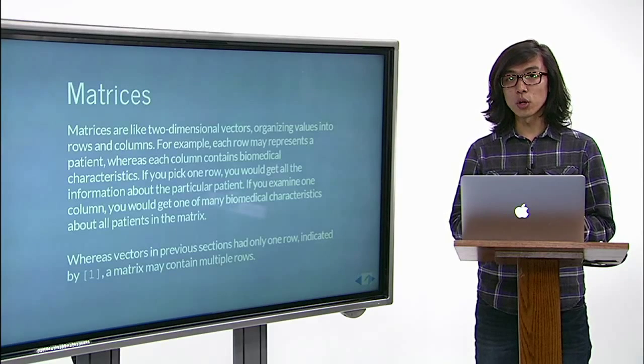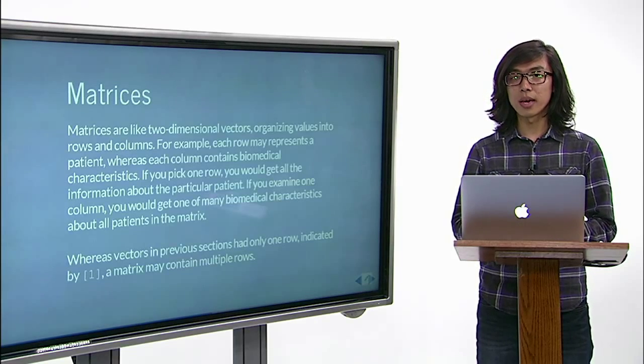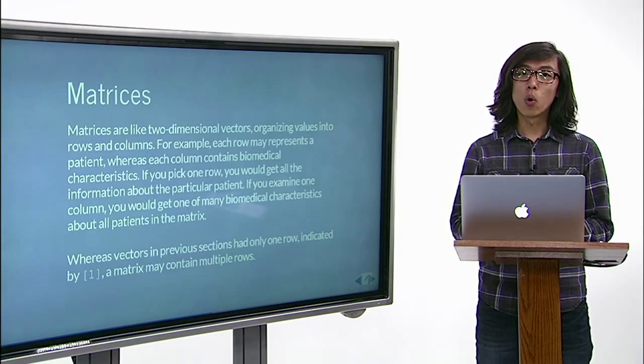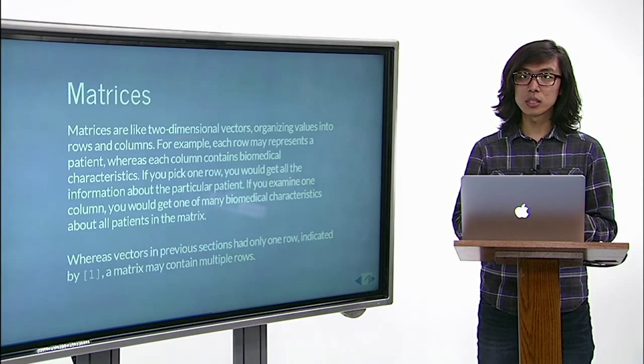If you pick one row, you'd get all the information about the particular patient. If you examine one column, you'd get one of many biomedical characteristics about all the patients in the matrix.